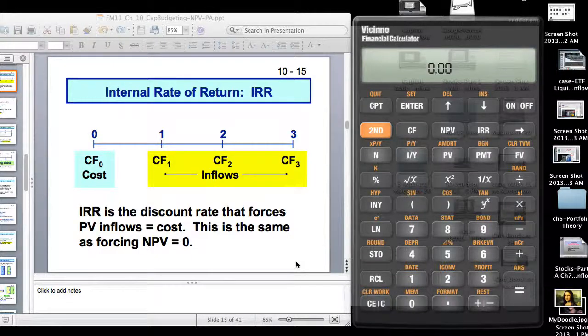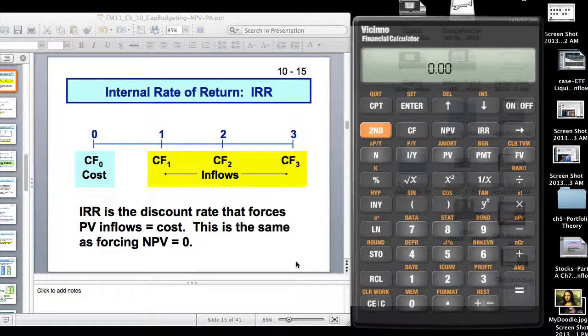So this is a continuation of the capital budgeting chapter. Today we're going to do basically the internal rate of return, NPV profiles, and a couple of items related to that, the modified internal rate of return.